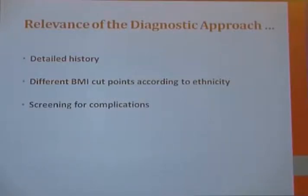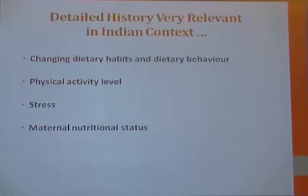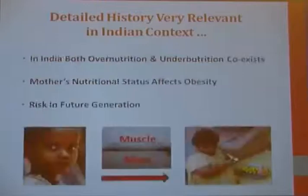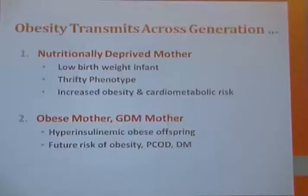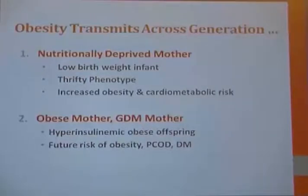Different BMI cut points according to ethnicity and screening for complications are very important in the Indian perspective. Changing dietary habits and behavior are critical with this changing time. Physical activity level is gradually declining in India as well. Stress levels and maternal nutrition status are important because in India both over-nutrition and under-nutrition coexist. The mother's nutritional status affects obesity risk in future generations, as obesity may transmit across generations. Nutritionally deprived mothers gave birth to low birth weight infants who developed a thrifty genotype and increased cardiometabolic risk.